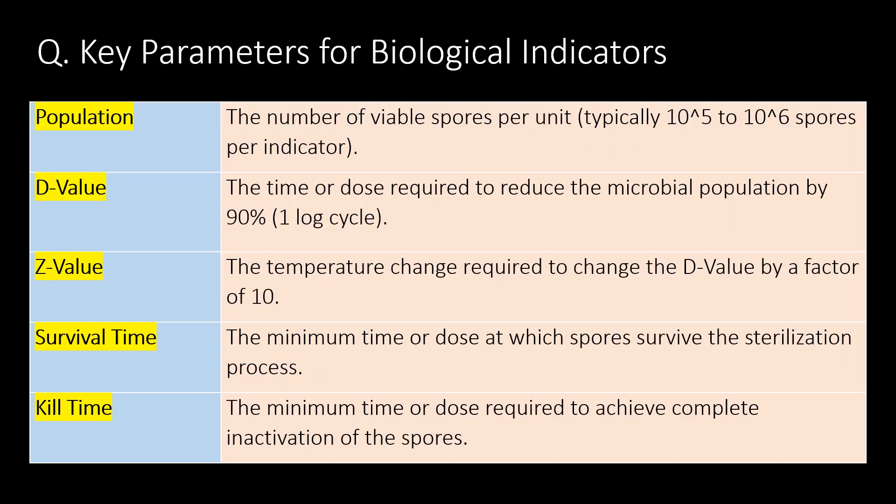What are the key parameters for biological indicators? Referring to a table for key parameters and their descriptions, the key parameters for biological indicators are: overall population, D-value, Z-value, survival time, and kill time.